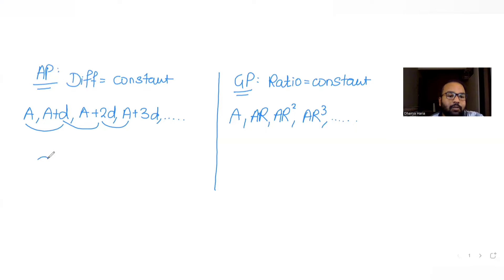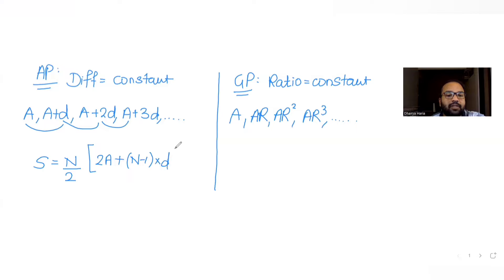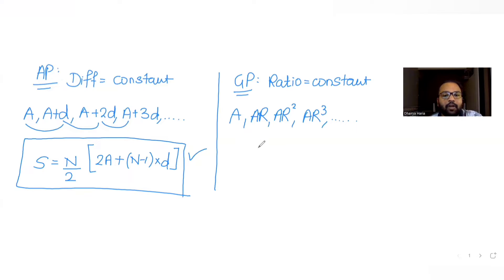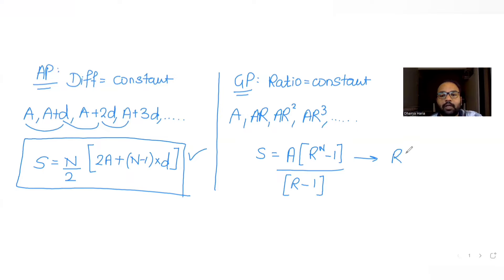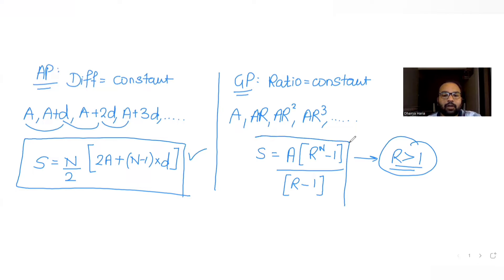The sum of all terms in an arithmetic progression is given by n/2 times (first term + last term), or equivalently n/2 times (2a + (n−1)d). The sum of all terms in a geometric progression is given by a(rⁿ − 1)/(r − 1), which is the formula used when the common ratio is greater than 1.